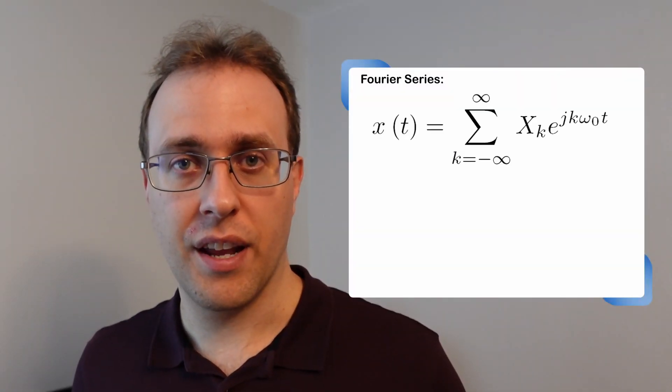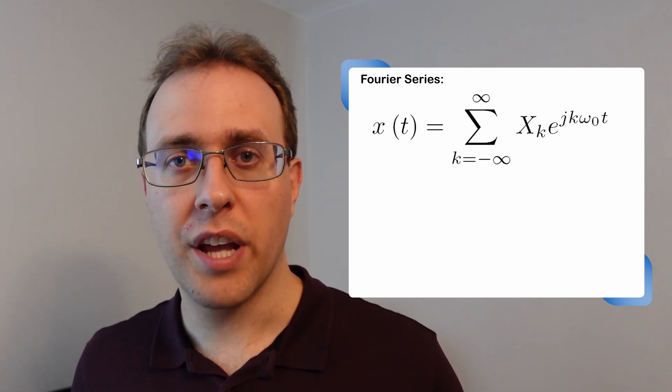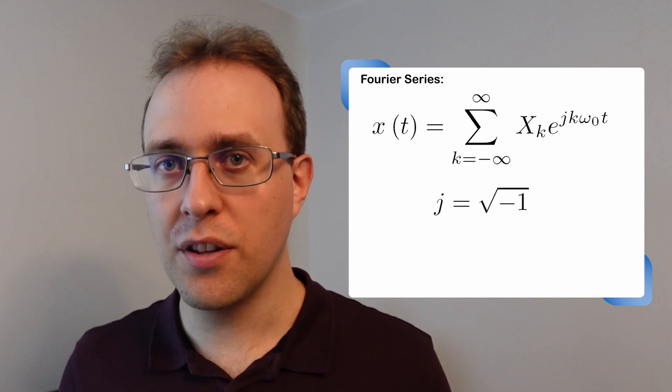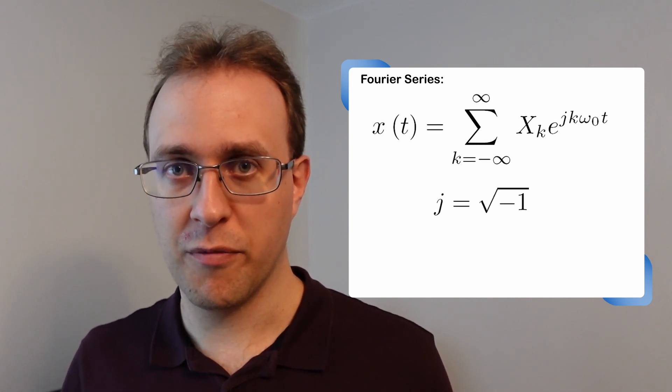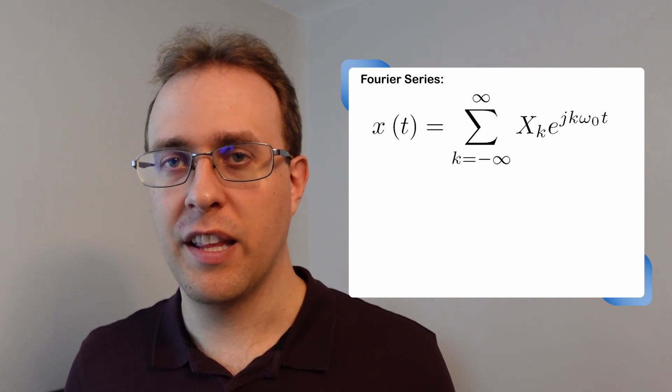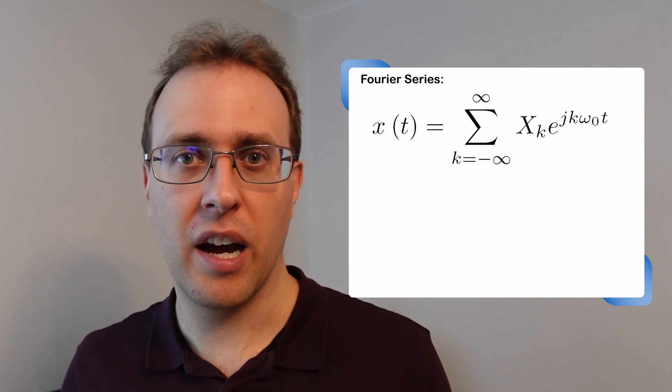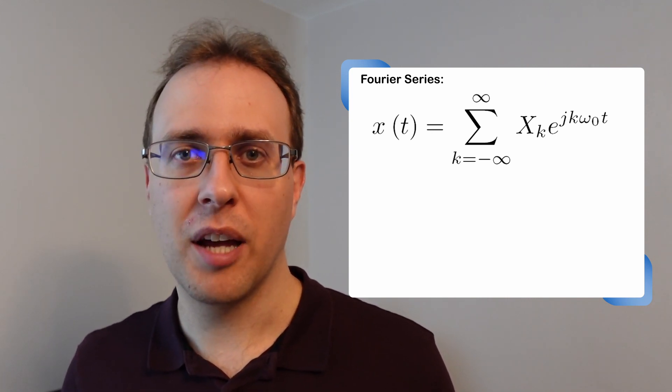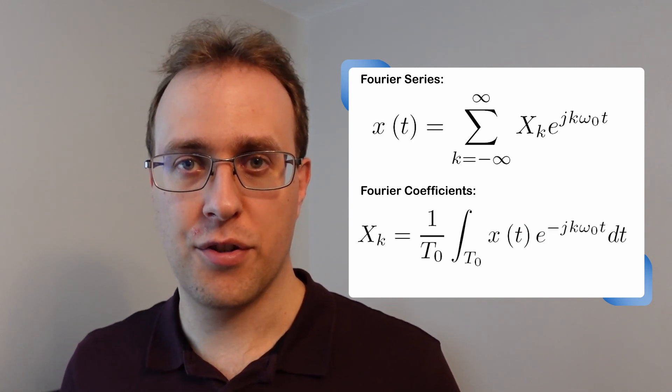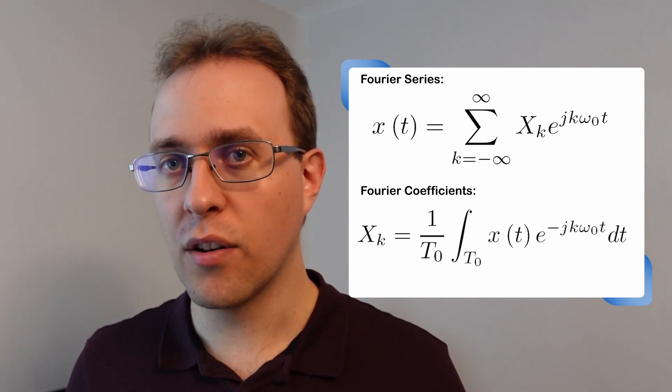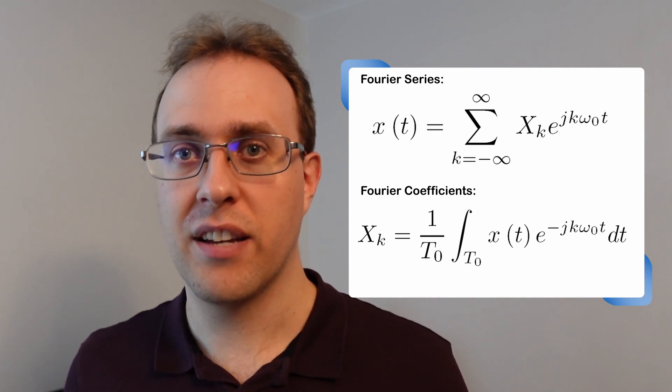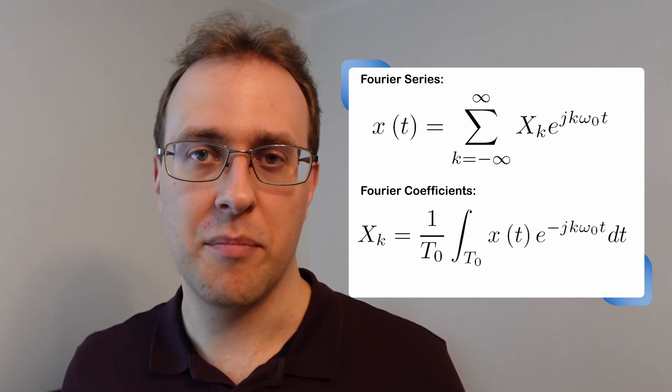The Fourier series is then written as a sum of complex Fourier coefficients, multiplied by complex exponentials e to the j, where j is the square root of minus one, multiplied by the index k, multiplied by the fundamental frequency in radians omega-0, multiplied by time t. The Fourier coefficients are found by integrating the signal over the fundamental period after it's been multiplied by e to the negative j times k times omega-0 times t.